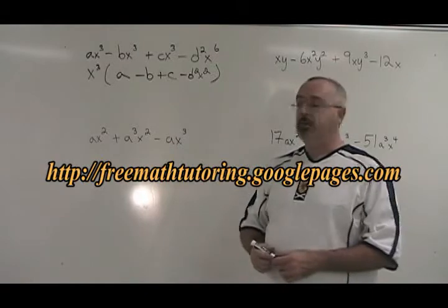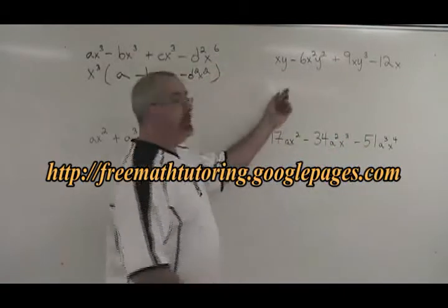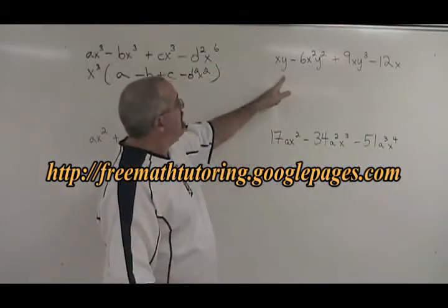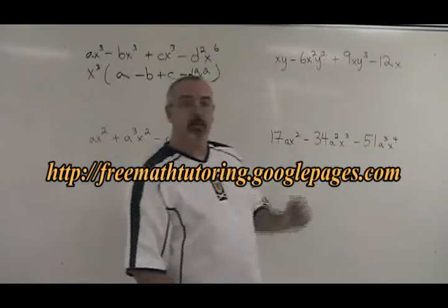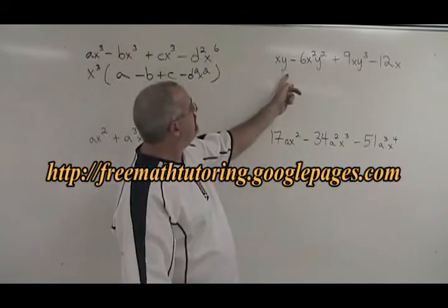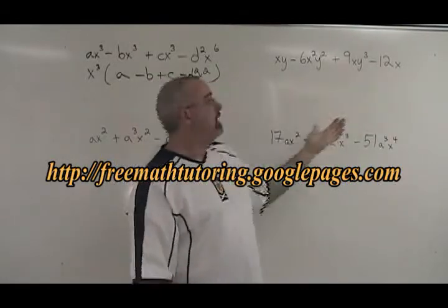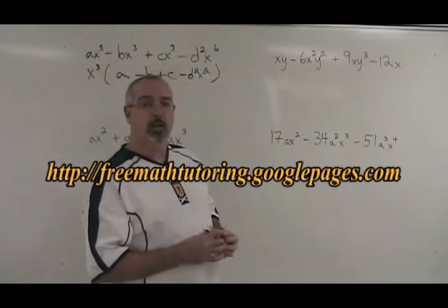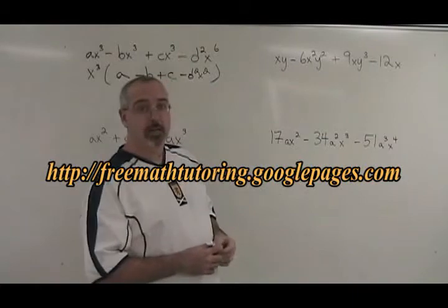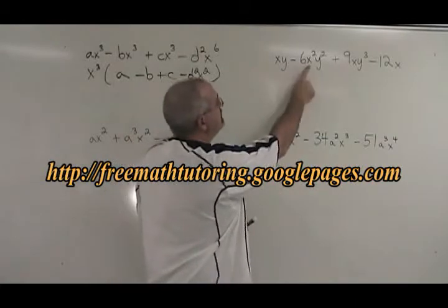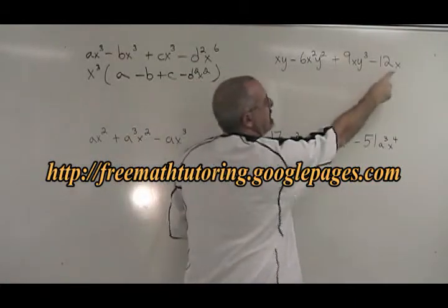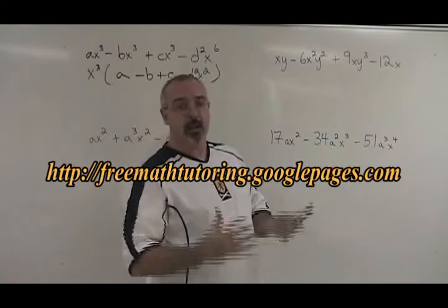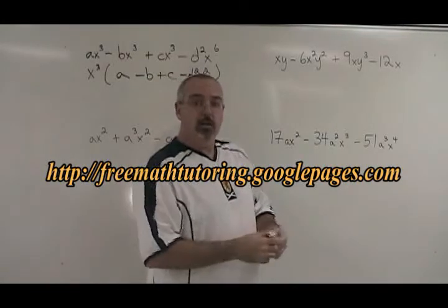Let's do a few more examples. In this example, all four of the terms have an X, but not all four terms have a Y, and not all four terms have a number like 6, 9, or 12. So the only thing we can take out is going to be something including an X. We have X, X squared, X, and X. The smallest X we see is X, so that is our largest common factor.